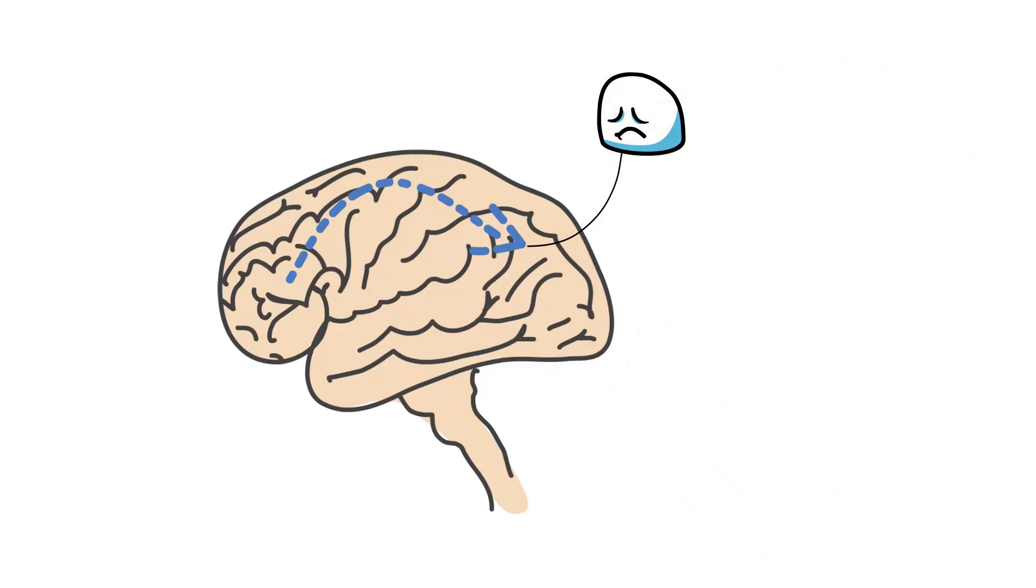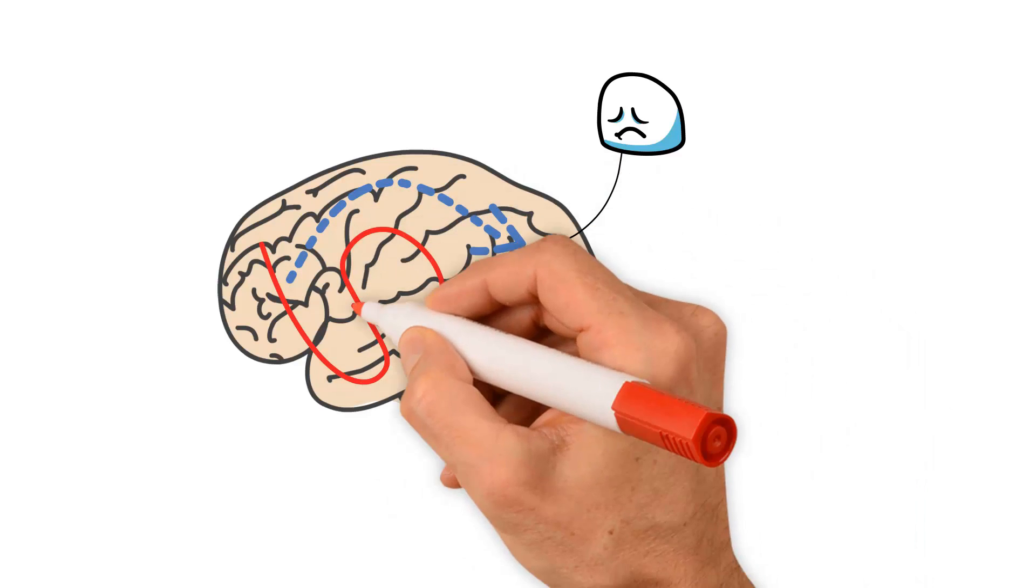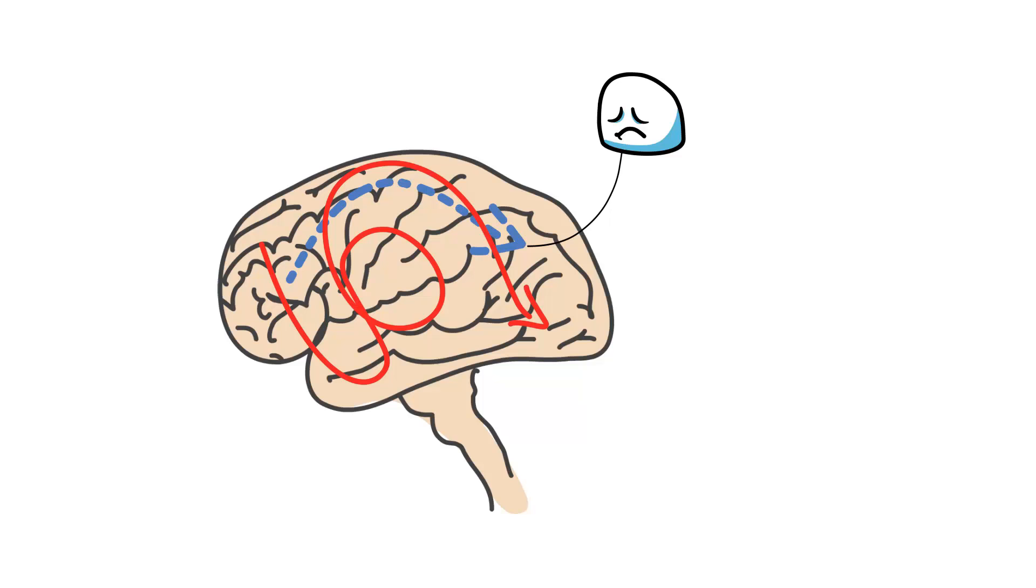By using CMT to change old negative memories to positive, Jane is creating new neural pathways in her brain. She's actually rewiring her brain to create a happier emotional state.